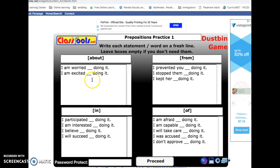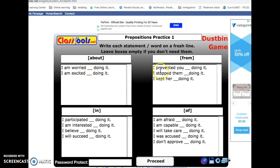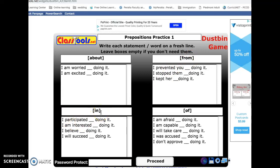So here we're practicing adjectives followed by different prepositions: worried about, excited about, prevented you from, participated in. So you can take a moment to review these things, and when you're ready, hit proceed.